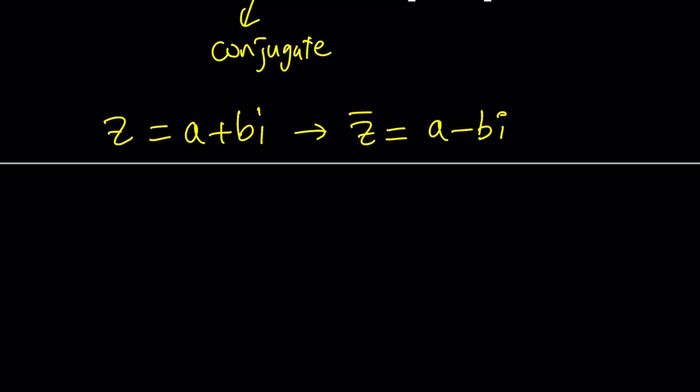The absolute value is the distance from zero and it's given by the square root of A squared plus B squared. These are related quantities. When you multiply Z by Z bar you get absolute value of Z squared because it equals A squared plus B squared. When you multiply two conjugates you always get a real number and that is classified as sum of two squares, not difference, sum of two squares.